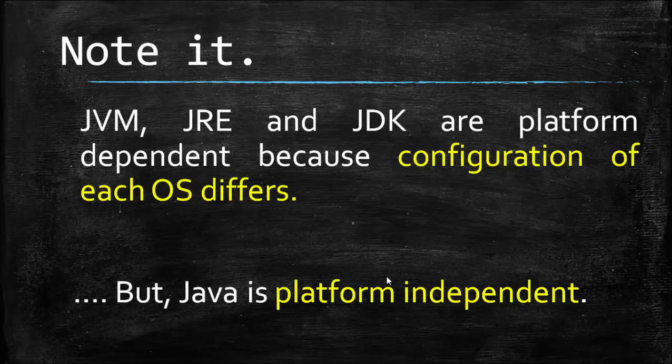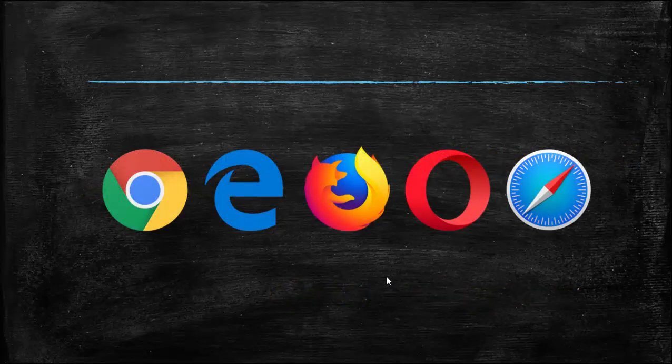First, note that JVM, JRE, and JDK are platform-dependent because they are dependent on the operating system. But the Java language itself is platform-independent. So again, JVM, JRE, and JDK are platform-dependent, and Java is platform-independent. We'll understand this with an example — these browsers: Chrome, Explorer, or Mozilla.